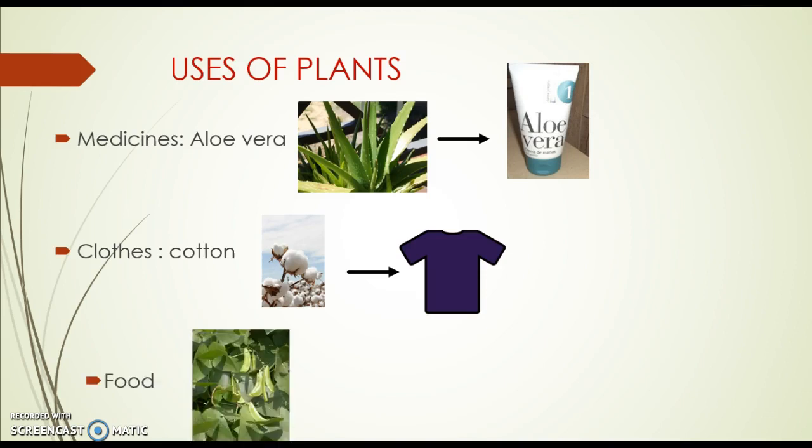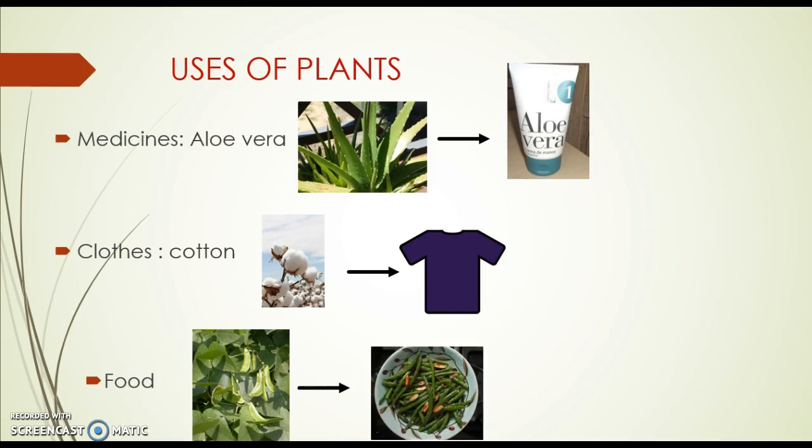And for food, we use the plants for food. We can eat the roots, the leaves, and the stem. For example, here we have a green bean plant. And you can eat the green beans.